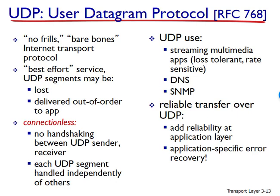UDP takes messages from the application process, attaches the source and destination port number fields for the multiplexing and demultiplexing service, adds two other small fields, and passes the resulting segment to the network layer. The network layer encapsulates the transport layer segment into an IP datagram and then makes a best-effort attempt to deliver the segment to the receiving host — best effort means it guarantees nothing in terms of delivery. If the segment arrives at the receiving host, UDP uses the destination port number to deliver the segment's data to the correct application process.